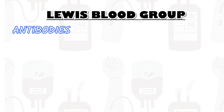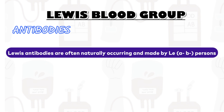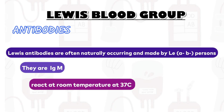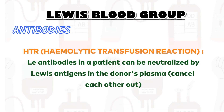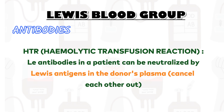Antibodies. Le-a antibodies are often naturally occurring and made by Le(a−b−) persons. They are generally IgM and react at room temperature and at 37 degrees Celsius. They do not cross the placenta, and Le-a antigens are not well developed on fetal RBCs, so the antibodies do not cause hemolytic disease of the fetus and newborn. HTR is clinically insignificant because the antibodies in a patient can be neutralized by the Lewis antigens in the donor's plasma — they cancel each other out.